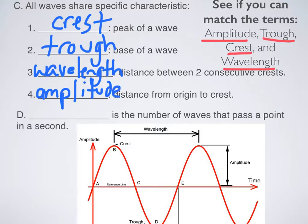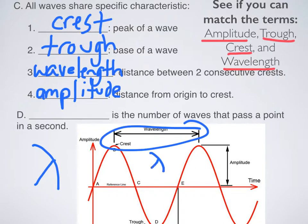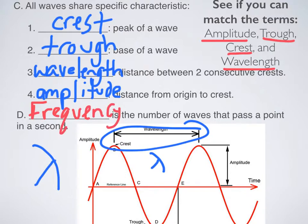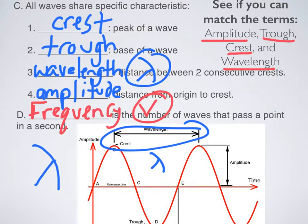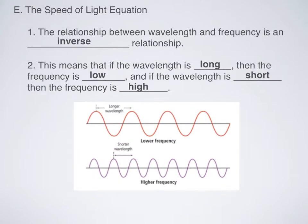The symbol for wavelength is something we're going to be seeing a lot of throughout this entire unit. It's a Greek letter called lambda. Now we have one last definition: the number of waves that pass a point in a given second is called frequency. The symbol for frequency is the letter V — it actually is a Greek letter, but we're going to abbreviate it as V since it would be easy to type out. So wavelength is lambda, and frequency is V.